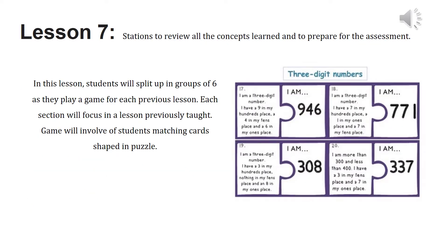Lesson seven is the review day. Students will be doing stations, usually around four different stations that they rotate through, spending about six to seven minutes in each. In each station they practice a different concept — for example, one for verb ser, another for possessive adjectives, another for verb tener, and another for descriptions — reviewing all the concepts from throughout the unit.